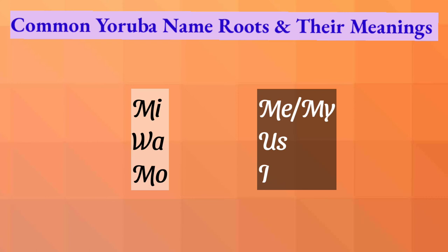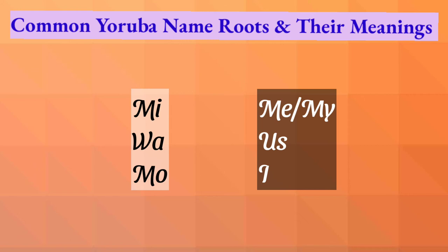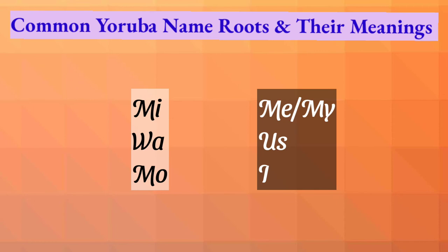This next set of name roots is related to pronouns — aropuruko. Mi means 'me' or 'mine.' Wa means 'us.' Mo means 'I.' An example for mi is Temidao — that's my name.